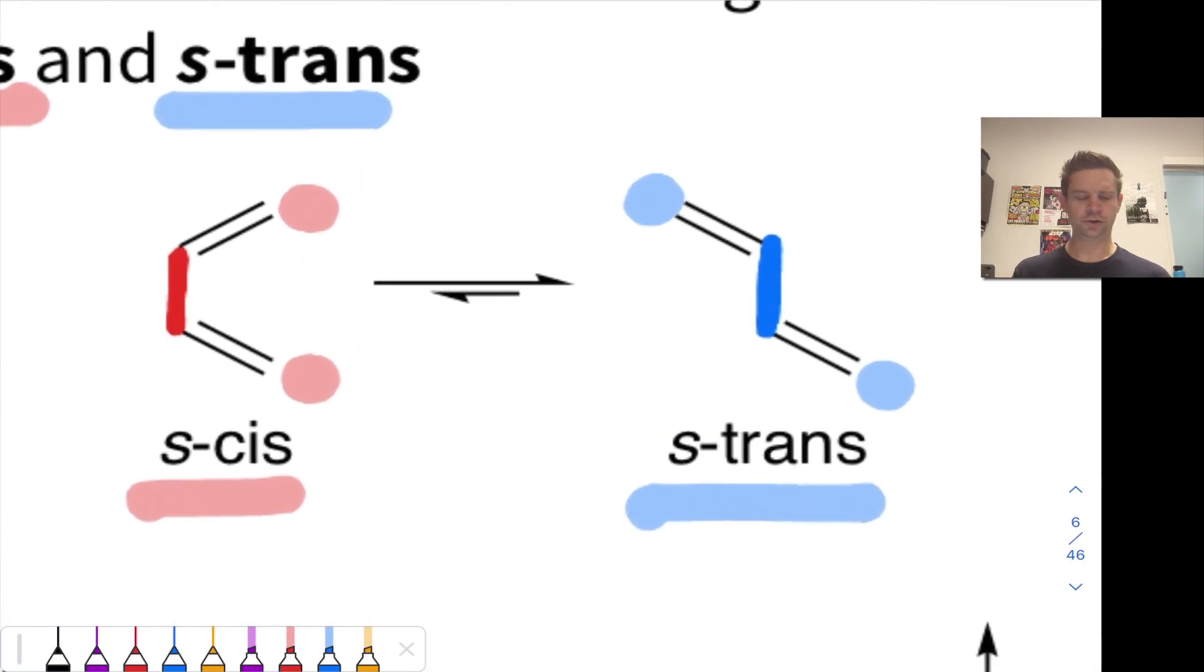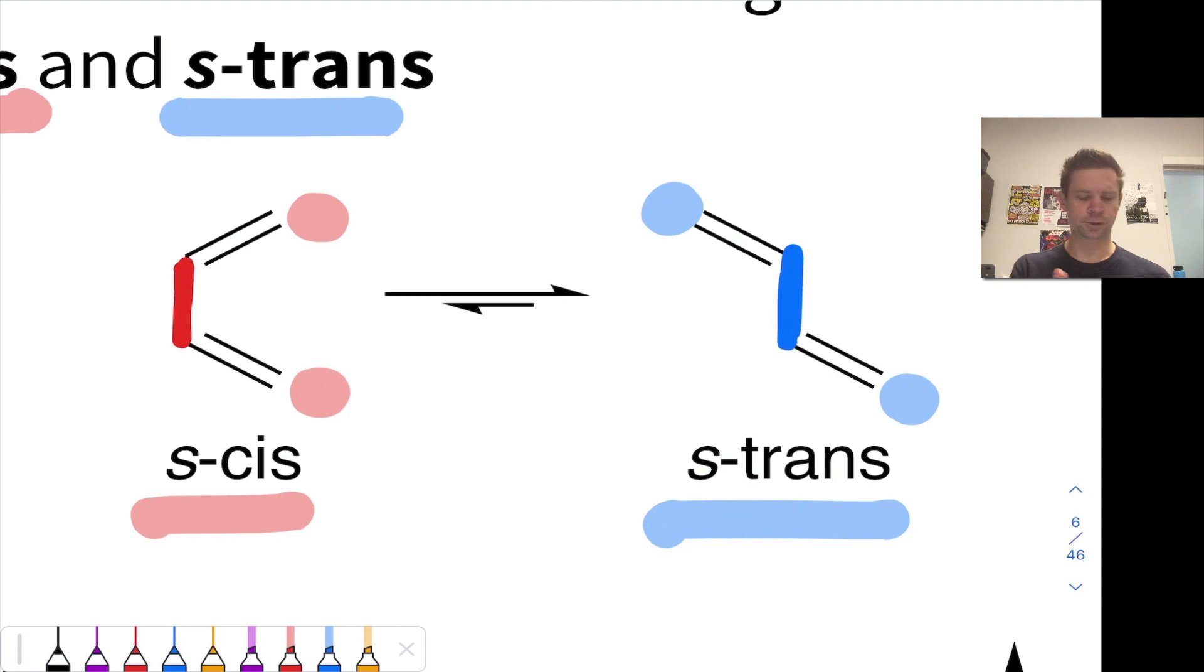The reasons why are pretty straightforward to understand. In the S-cis conformer, the two CH2 groups on the ends of the alkenes are relatively close to each other. There are hydrogens, for example, here and here that are bumping into each other.